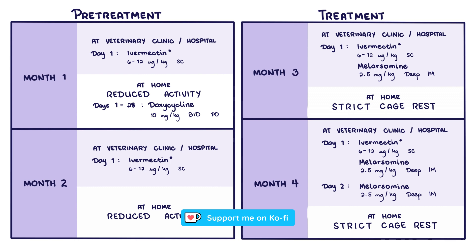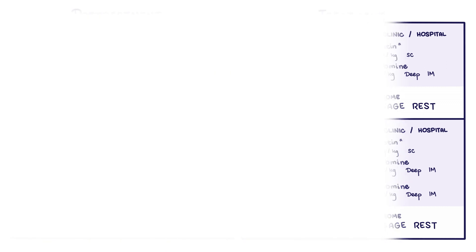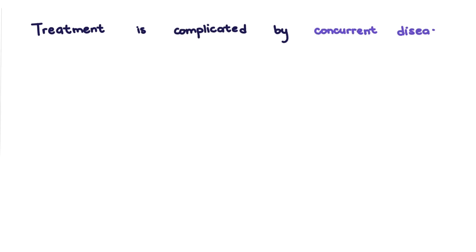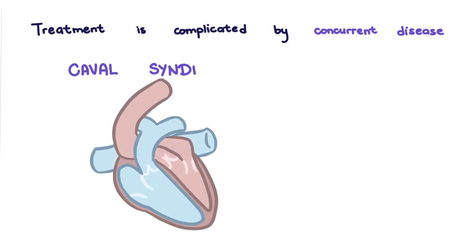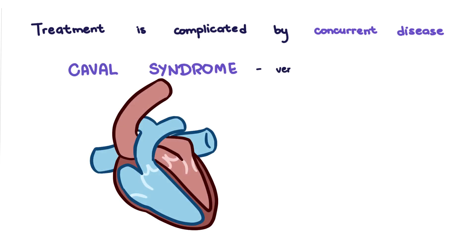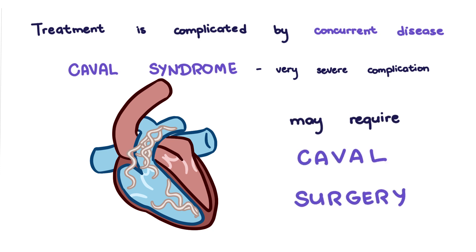If the dog has other concurrent diseases, or has succumbed to Caval syndrome, treatment may be more complicated. Caval syndrome is a very severe complication of heartworm disease where the worm burden is so heavy that the worms crowd beyond the pulmonary arteries into the right heart chambers and vena cava. It does a lot of things to the heart and may require surgery.